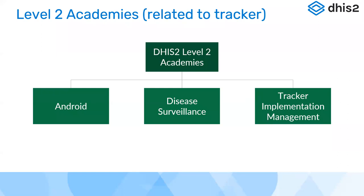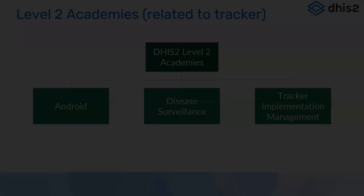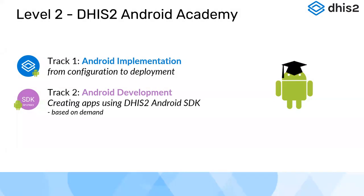At Level 2, there are three tracker-related academies: Android, disease surveillance, and tracker implementation management. For the Android academy, there are two separate tracks: DHIS2 Android implementation covering configuration and deployment, and Android development covering the DHIS2 Android SDK. These academies have been online but are likely to return to on-site formats going forward.